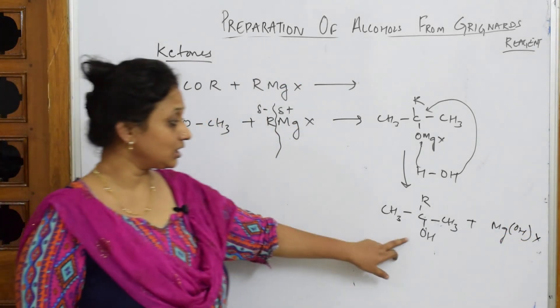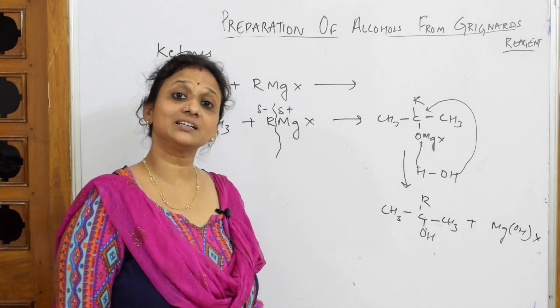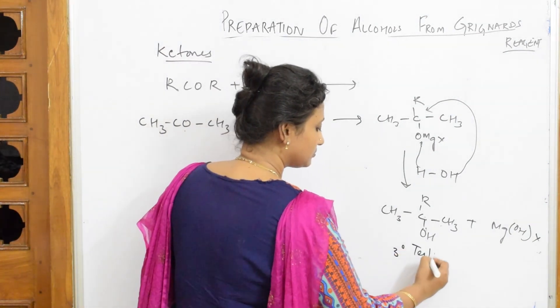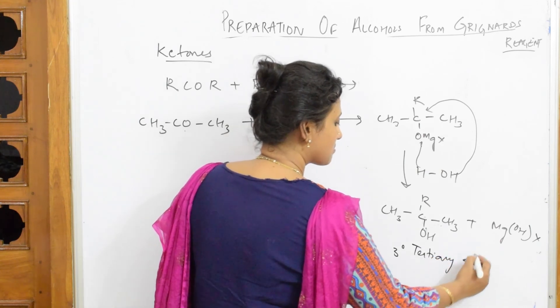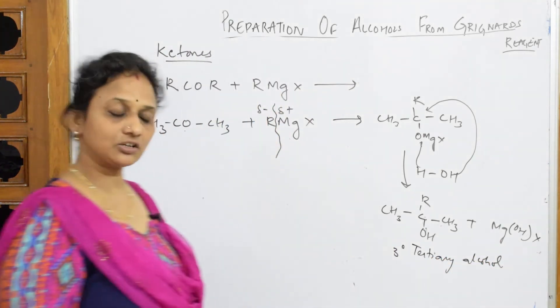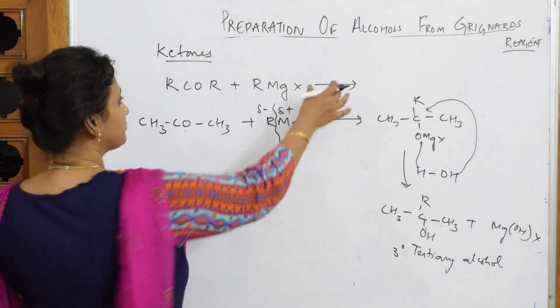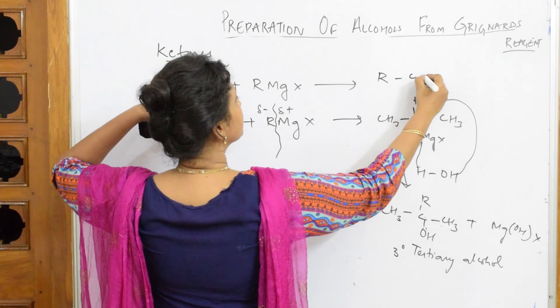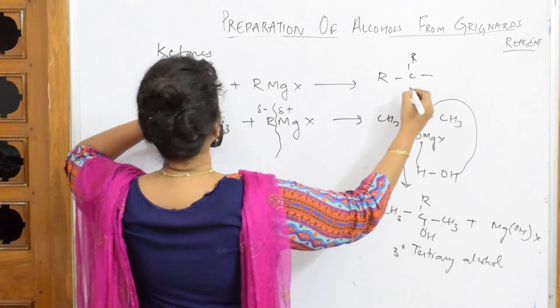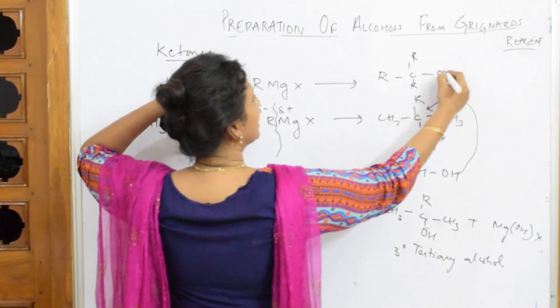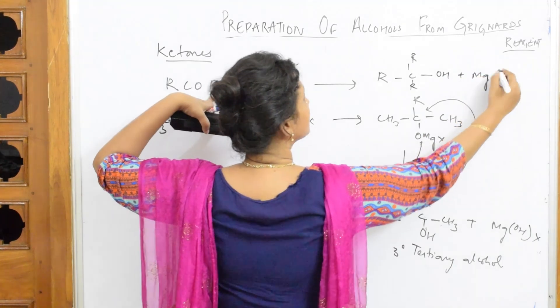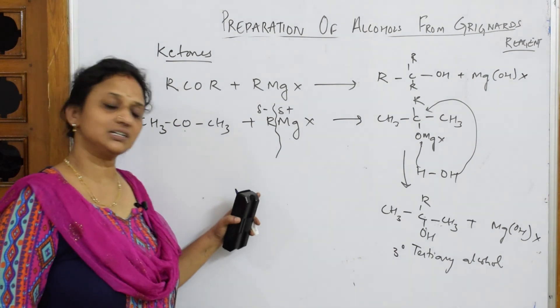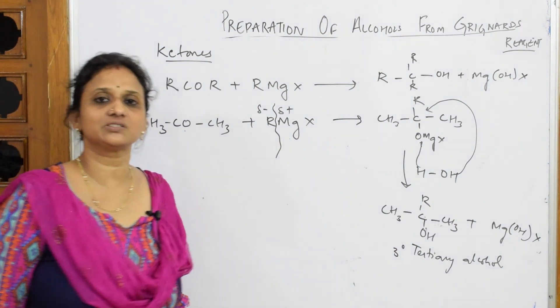What did I get? I got which alcohol? Three alkyl groups. I got tertiary alcohol. You got tertiary alcohol, so please note it. Now I have to write this also. You get R, C, one more R group, here also one more R group, alcohol plus MgOHX. So ketones on addition with Grignard's reagent we get tertiary alcohol. Please note it.